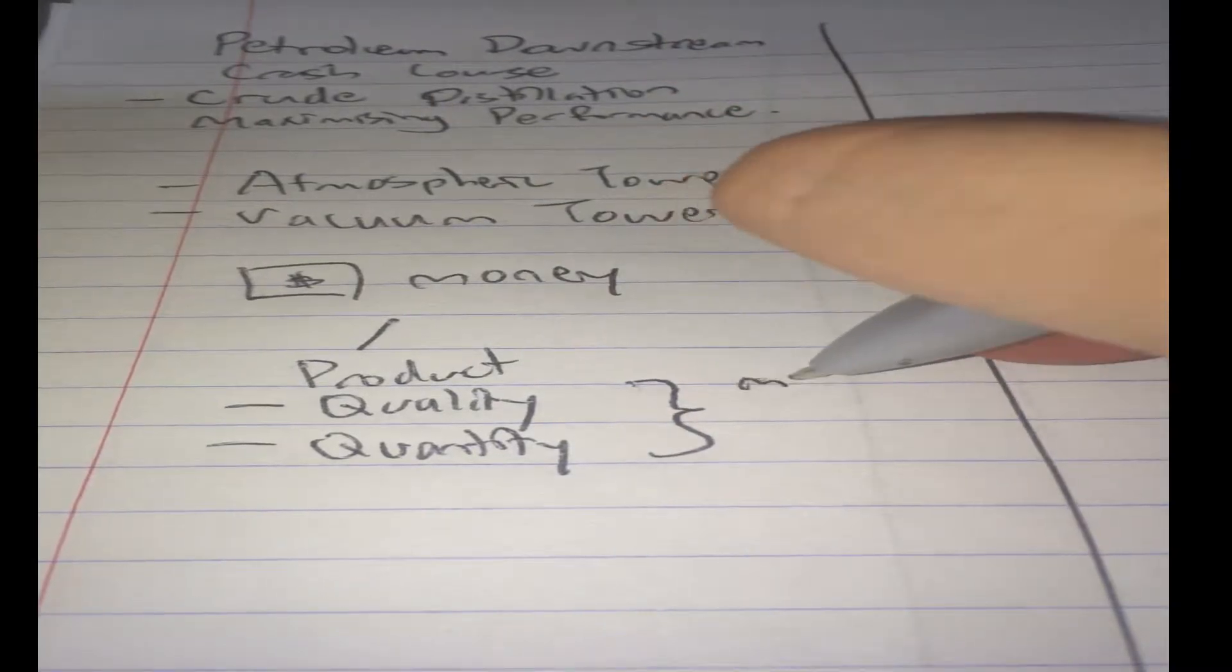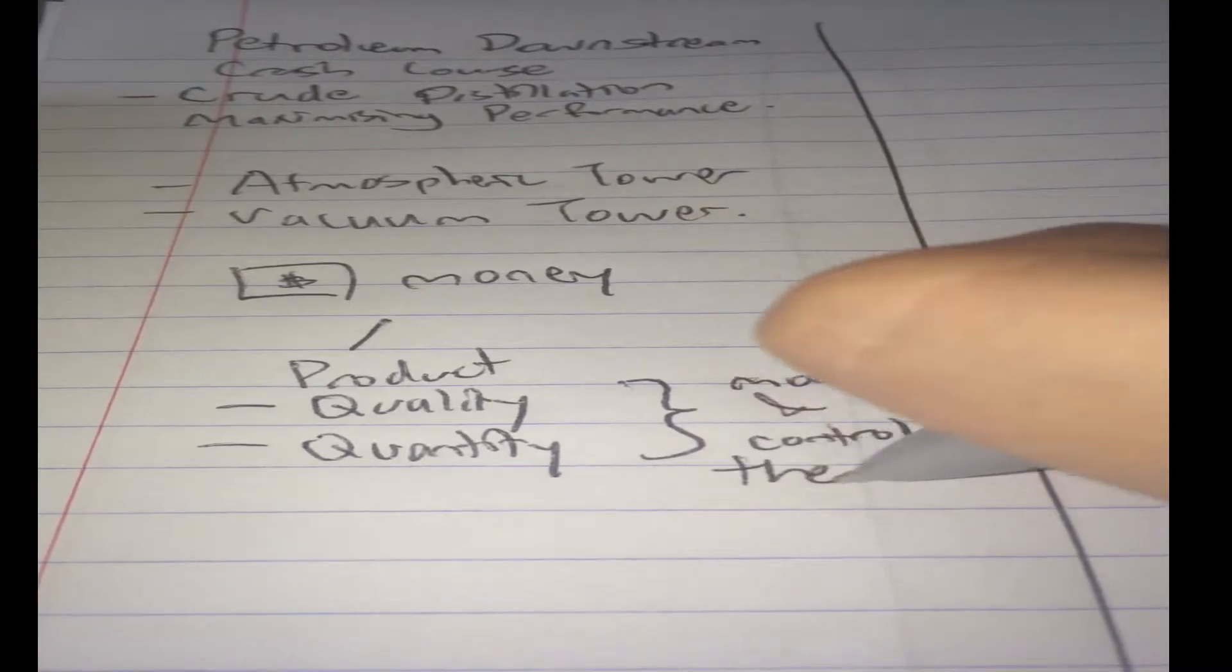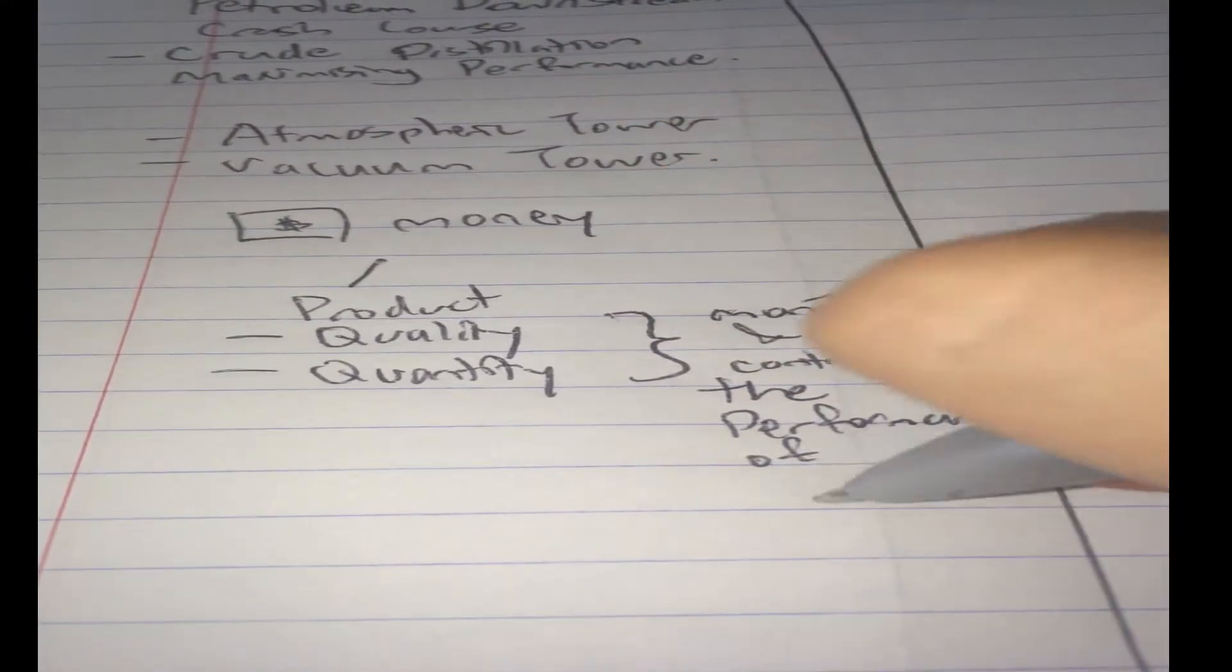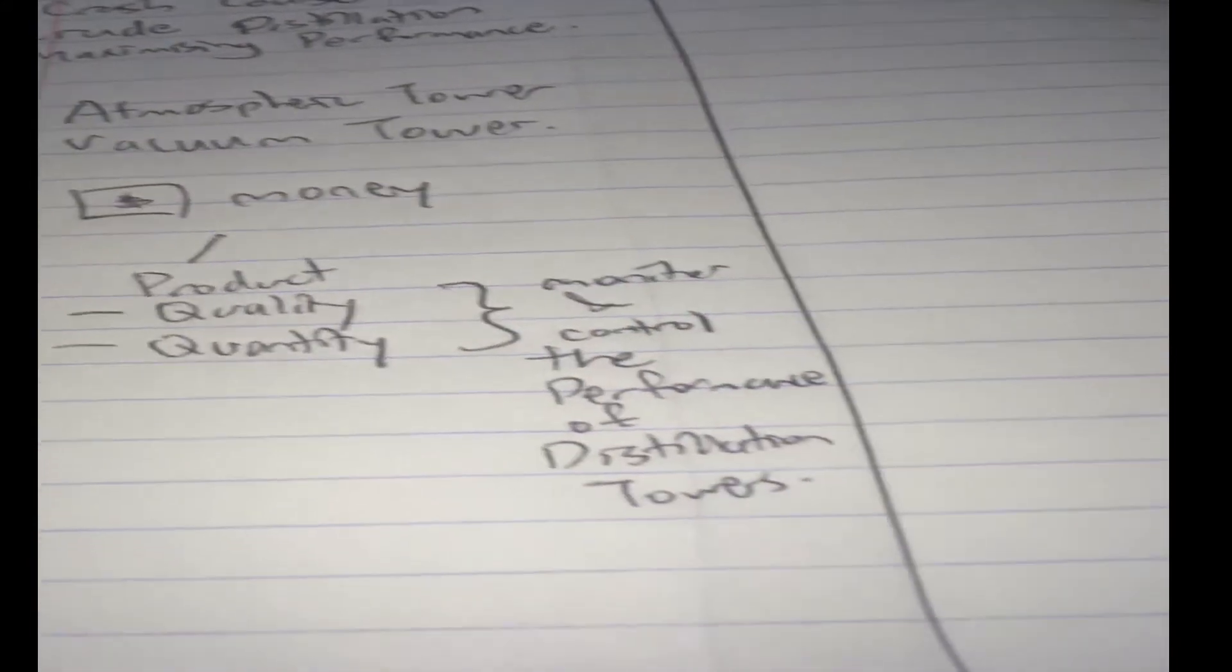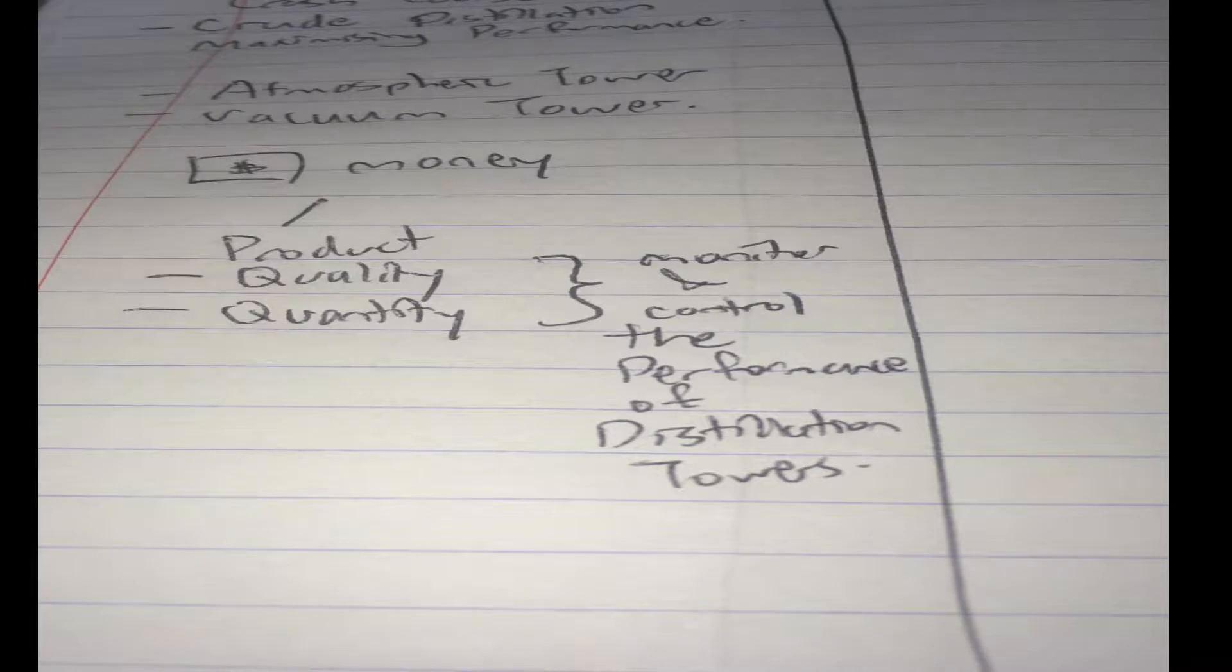So with higher product quality and quantity, you're going to make lots more money. How do you control the quality and quantity of your petroleum products? You have to monitor and control the performance of distillation towers. Now, this is a large part of what chemical engineers actually do in the refinery, which is why they are paid so handsomely for their jobs, and why each of us can enjoy our fuels every day.